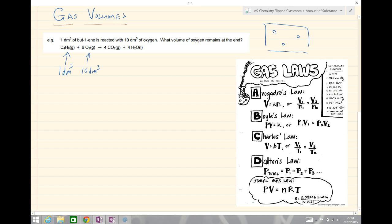Our equation tells us that one mole of but-1-ene would react with six moles of oxygen to produce four moles of CO2 and four moles of water. We could equally look at this in decimetres cubed. If I had one decimetre cubed of but-1-ene, I would react with six decimetres cubed of oxygen and make four decimetres cubed of CO2 and four decimetres cubed of water if it was a gas.